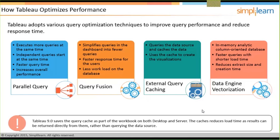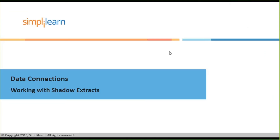Based on these techniques, that's how Tableau improves performance and optimizes queries. Tableau handles all of these automatically — it performs parallel queries on its own, uses query fusion to shorten queries, applies external query caching, and provides data engine vectorization to make everything quicker and faster.